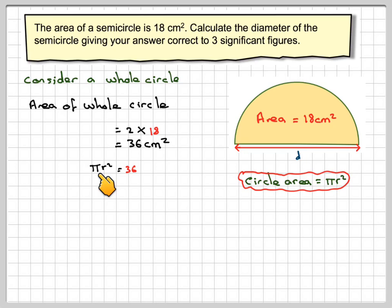So rearranging, first of all, this is multiplied by π, so the opposite is to divide by π, so we get that r² is equal to 36 over π.